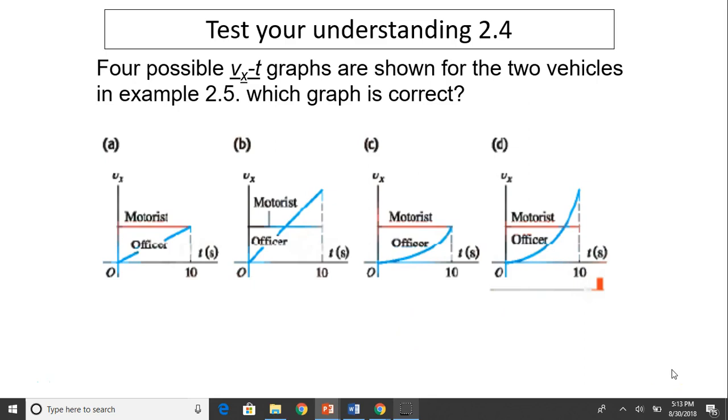Next, test your understanding. Four possible VT graphs are shown for the two vehicles in the last example. Which graph is correct? This is a VT graph. Remember the area under the VT graph represents displacement. We already concluded the two displacements are the same. So which one has the same area between motorist and officer? The answer is B. The area under each graph should be the same.